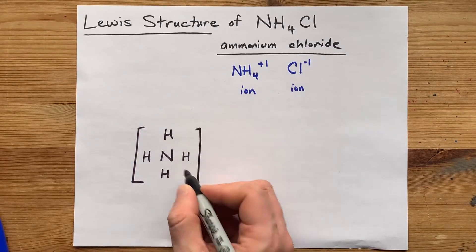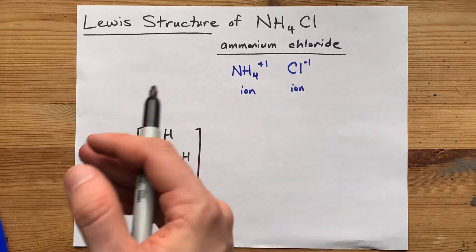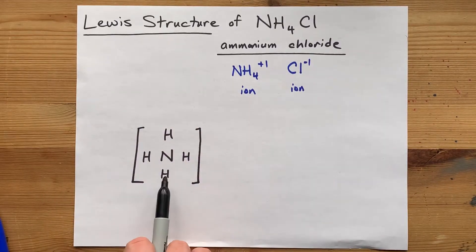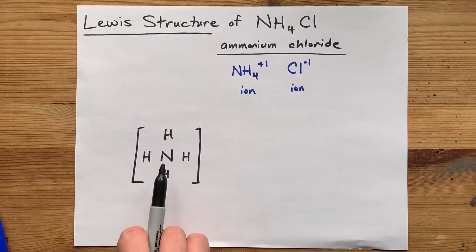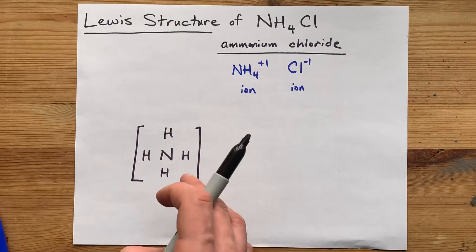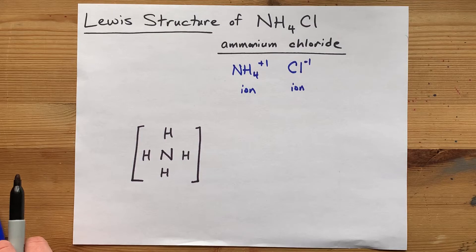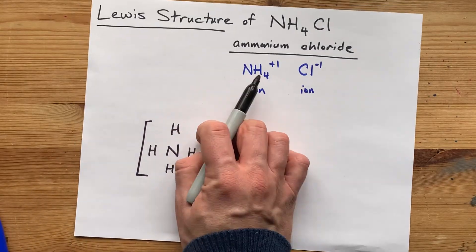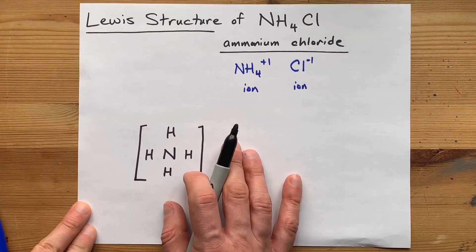Now, to complete that Lewis structure, which is covalently bonded within itself because it's a non-metal bonding to another non-metal, you need to count the number of valence electrons that each of these atoms brings.